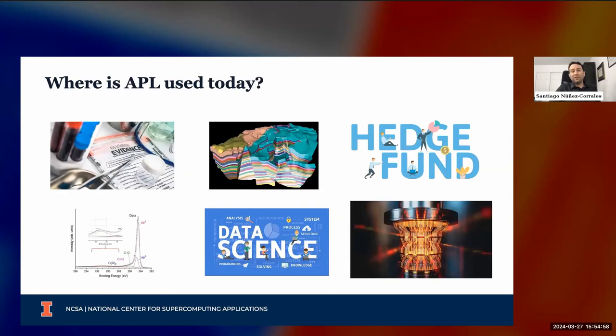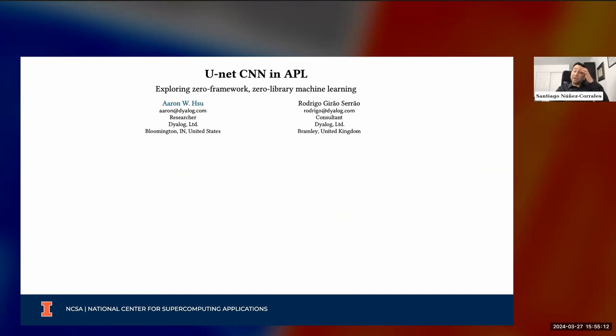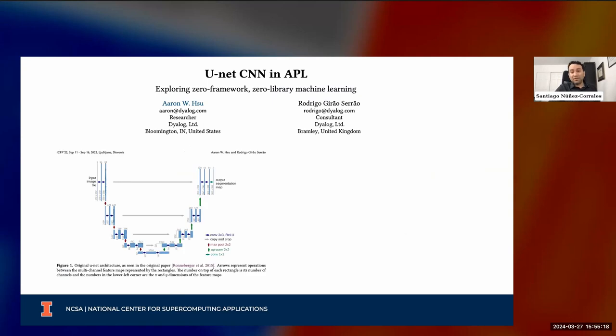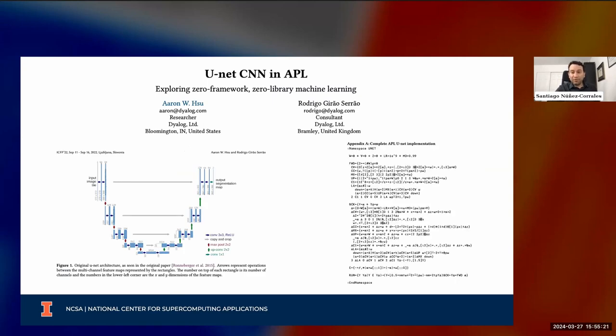The few minutes that I have—what is APL used for today? In forensics, geological studies, hedge funds, analyzing scientific data, data science more generally in many cases, and more recently, quantum computing. The paper I wanted to recommend was the UNET CNN in APL by Aaron Hsu and Rodrigo Girão Serrão, which they show very elegantly that you can write the full code for a neural network in a single page. This should be in a t-shirt, by the way. This is cool enough that there's ways to think about being more public.